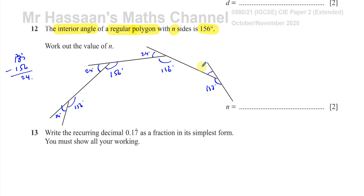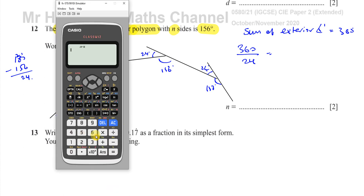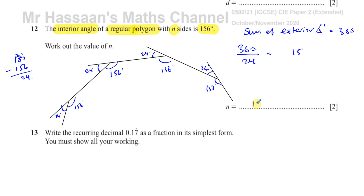The reason I like to work with exterior angles is because the sum of exterior angles is always the same in any polygon — it's always equal to 360 degrees, no matter how many sides it has. So if we use the exterior angles, it's really easy: I want to know how many 24s fit into 360. That tells me how many exterior angles there are, which tells me how many sides there are. So 360 divided by 24 gives me 15. So n is equal to 15.